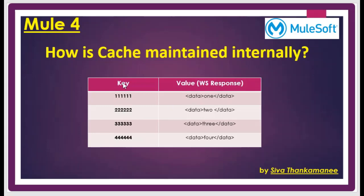MuleSoft maintains cached data internally as key-value pairs. The key is what we choose — we need to decide how to retrieve the value when the second or third request is sent. The key is best formed from one of the values in the input payload. In this video, we are going to see how to form the key based on the entire input payload. The value will be the web service response — we retrieve the web service response, cache it before responding, and for consecutive attempts, if the key is already available, the cached value is returned.